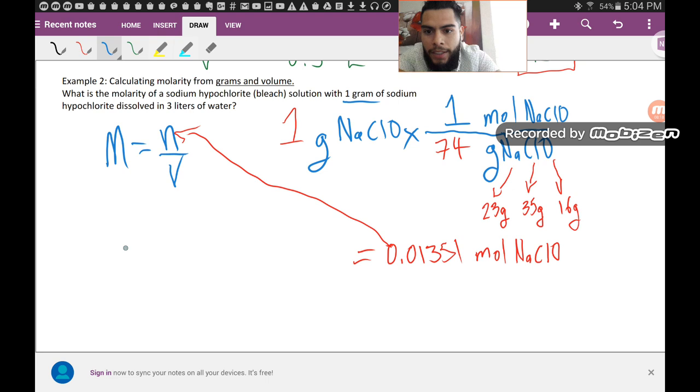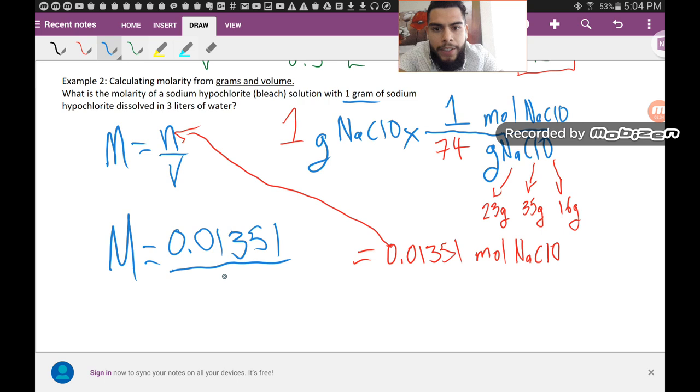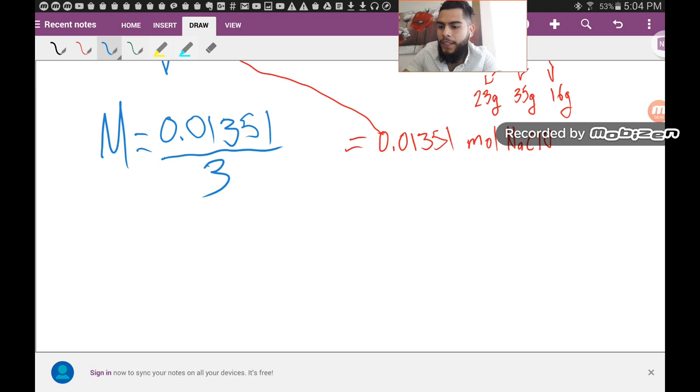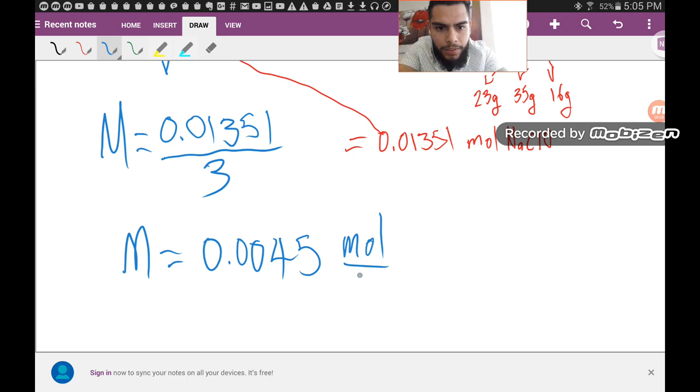So we say molarity is going to equal that number of moles, 0.01351, divided by three liters of water. And these are moles, those are liters, we're dividing them. Whenever we do that, we obtain roughly: the molarity is going to equal 0.0045 moles per liter. So that is the concentration of the sodium hypochlorite solution.